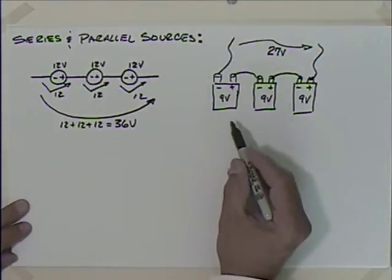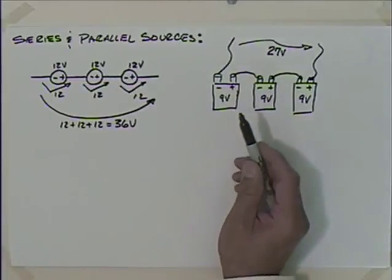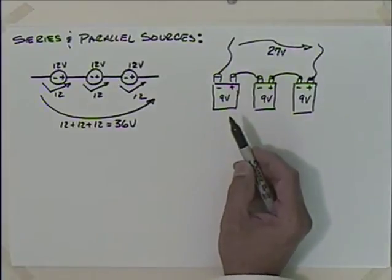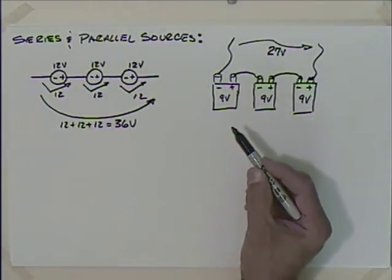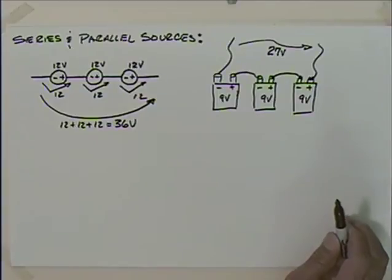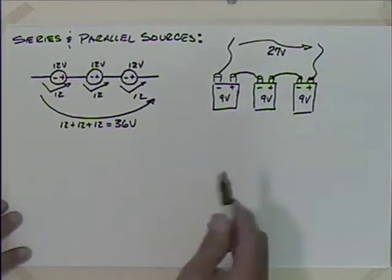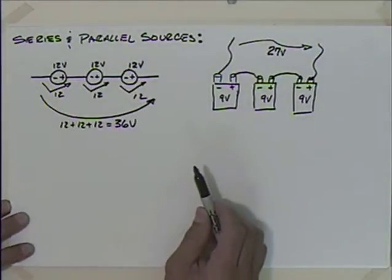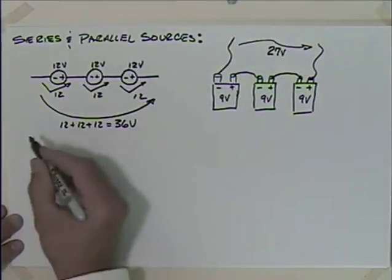Probably your calculator batteries are arranged in series. You've got a bunch of AA or AAA batteries that may look physically like they're in parallel, but they're probably arranged in series to get 4.5 or 6 volts. It's not necessarily how they're physically set in there, but how they're actually hooked up.